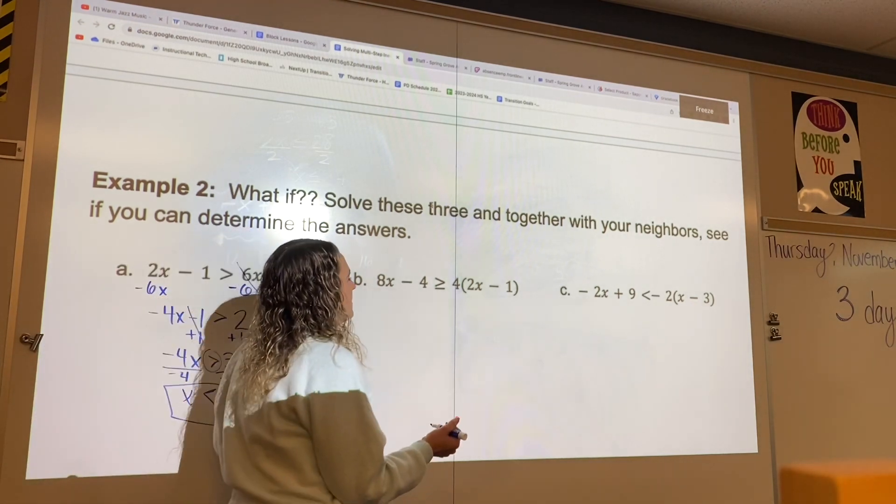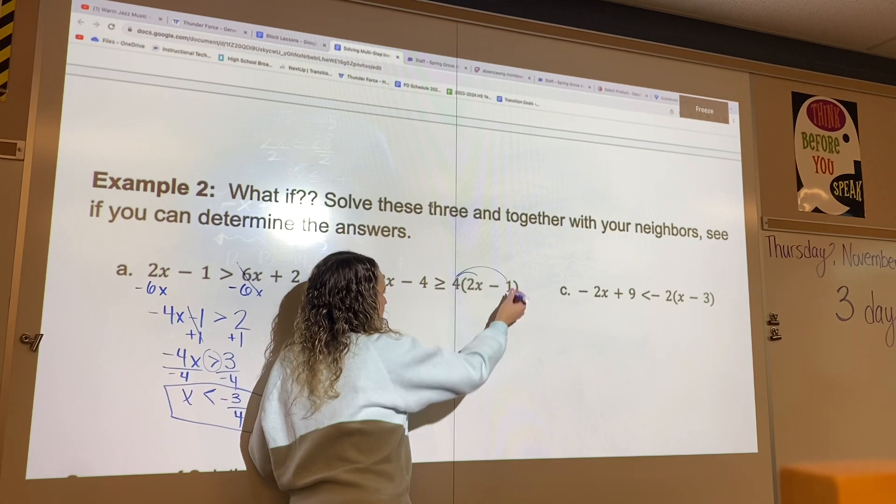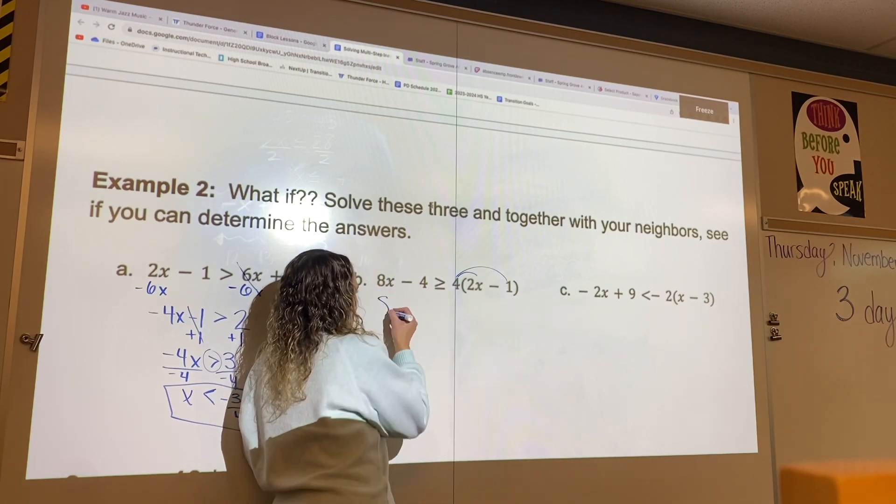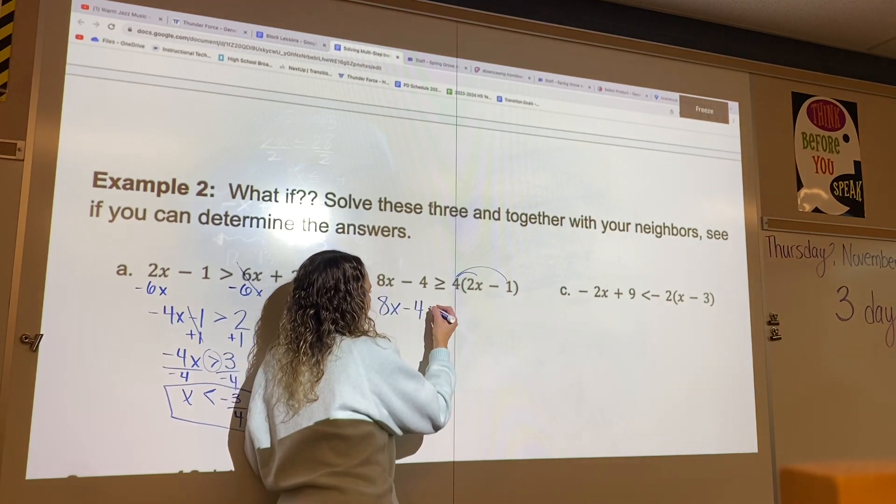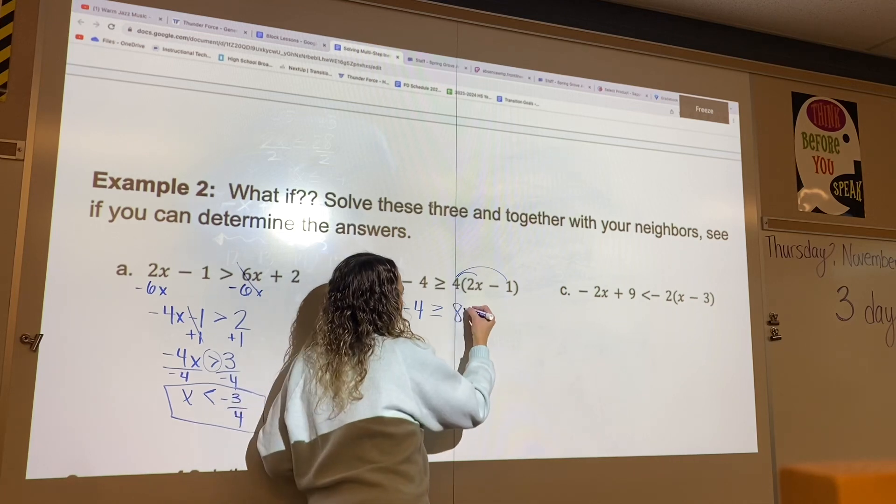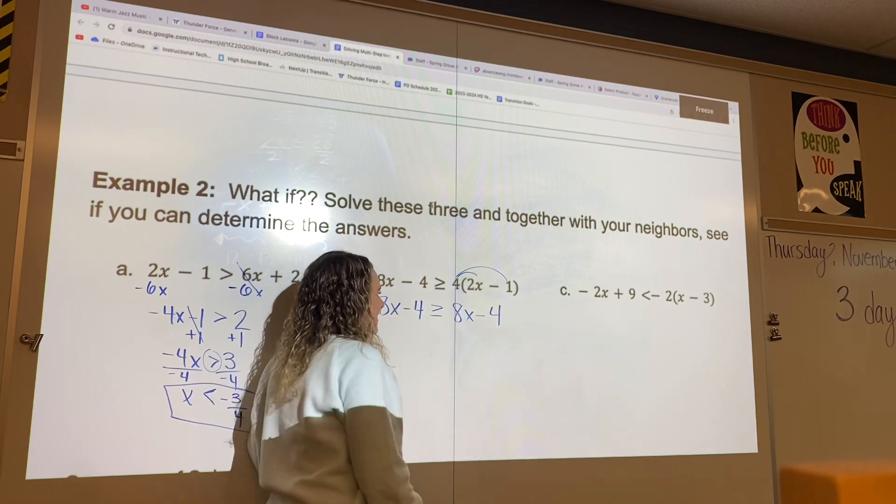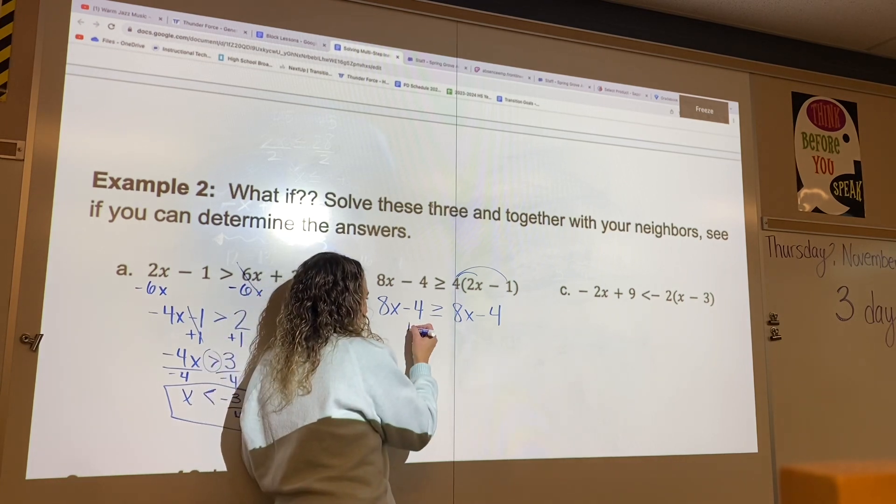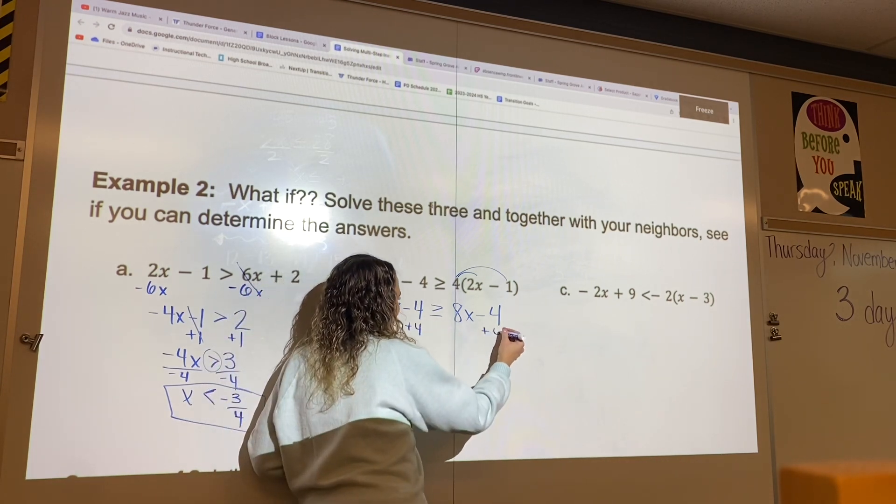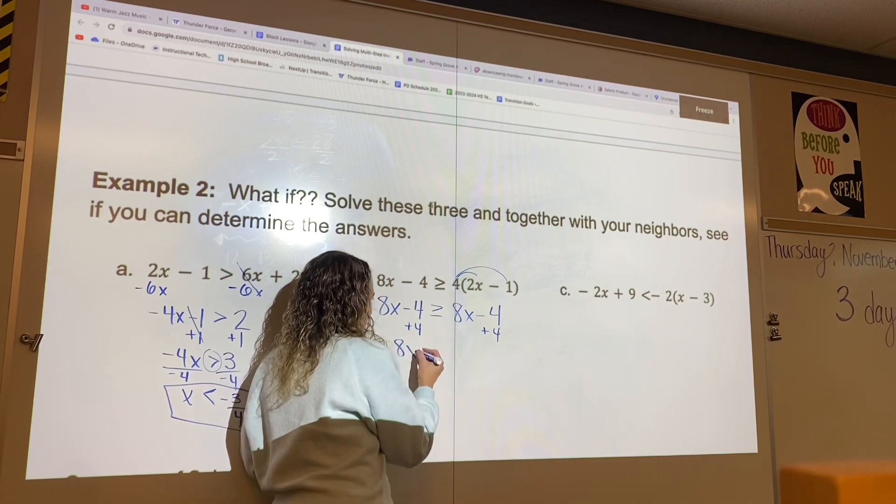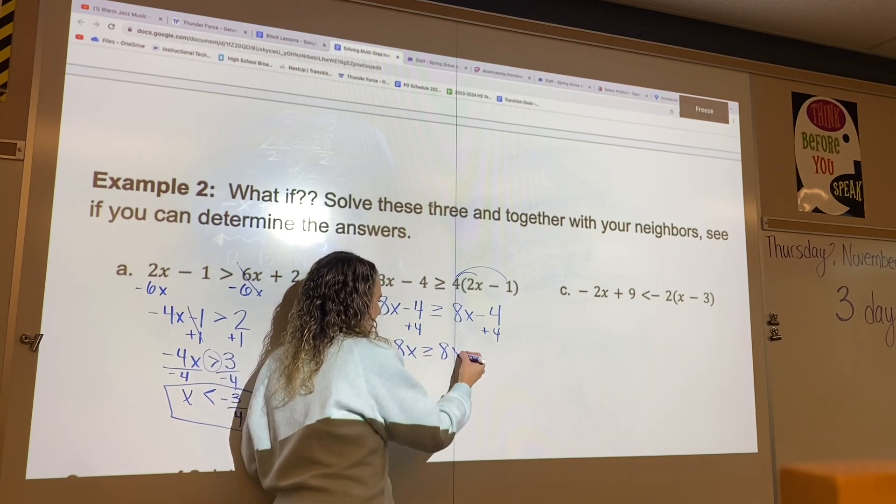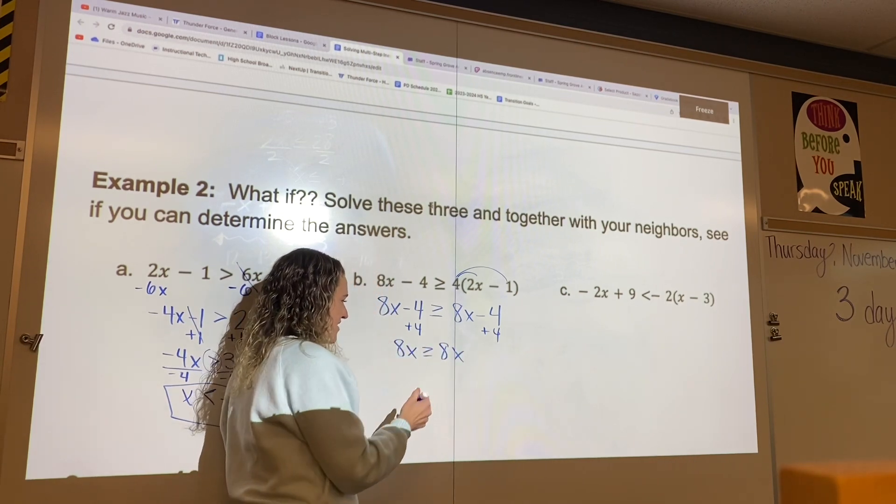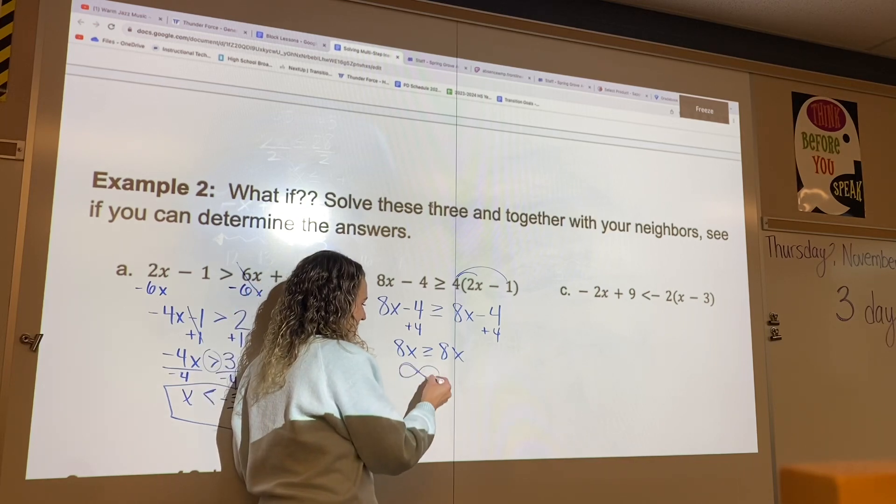Over here, first thing I'm going to do is distribute. So we have 8x minus 4 is greater than or equal to 8x minus 4. Well, I think I see what's happening here. So if I add the 4 and I keep going here, I have 8x is greater than or equal to 8x. As you can see, it's the exact same thing, which means infinitely many solutions.